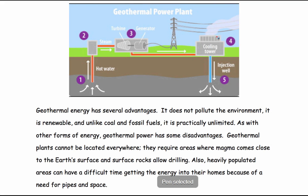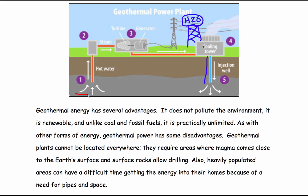We'll finish this reading by looking at this geothermal power plant and its advantages and disadvantages. A geothermal power plant requires a large resource of water — there's likely a water tower providing water for this process. A well is drilled down into the bedrock, down to where the hot rocks and hot magma would be. Water is then pumped down through the well into areas where it fills a reservoir or aquifer.